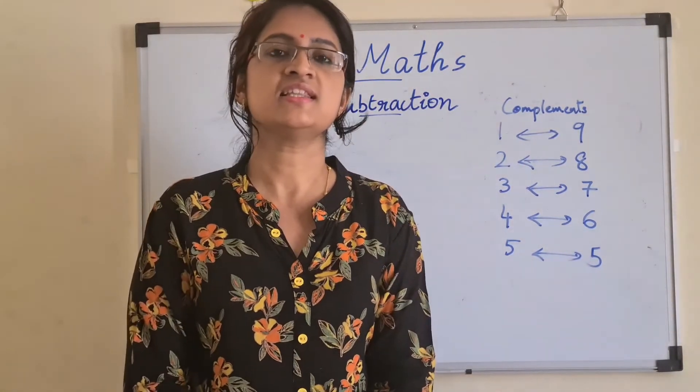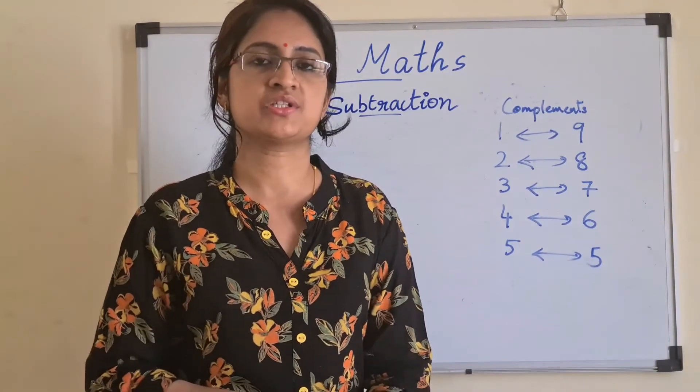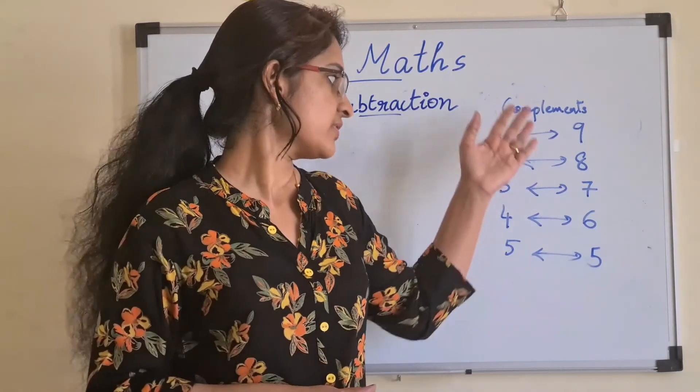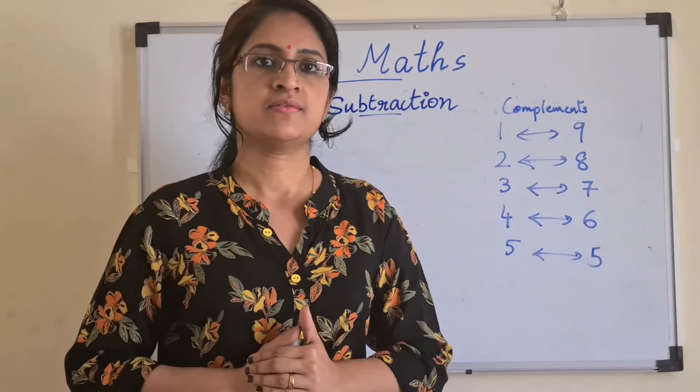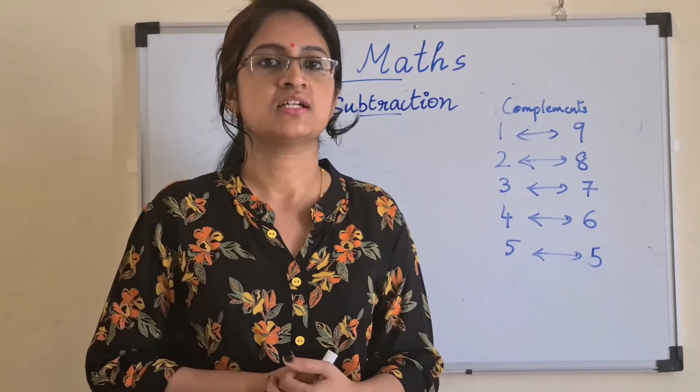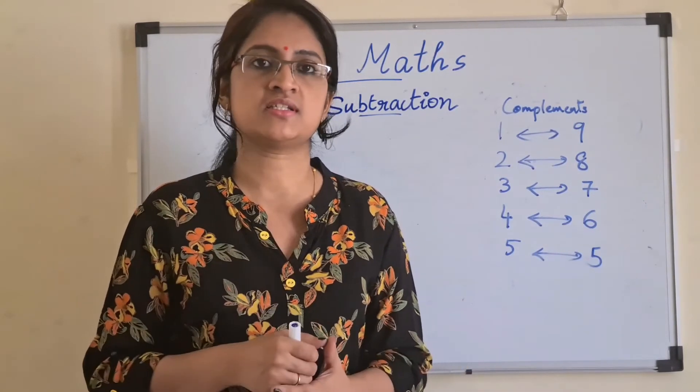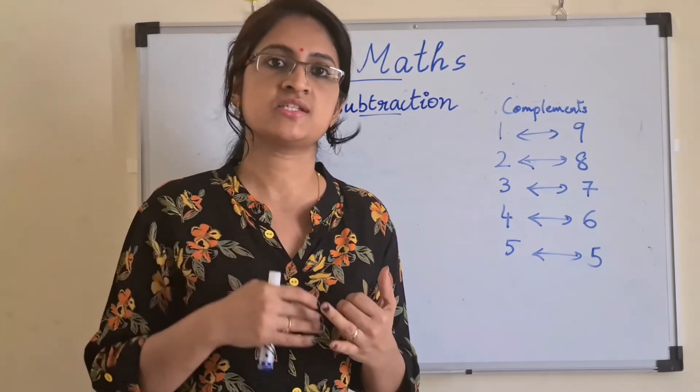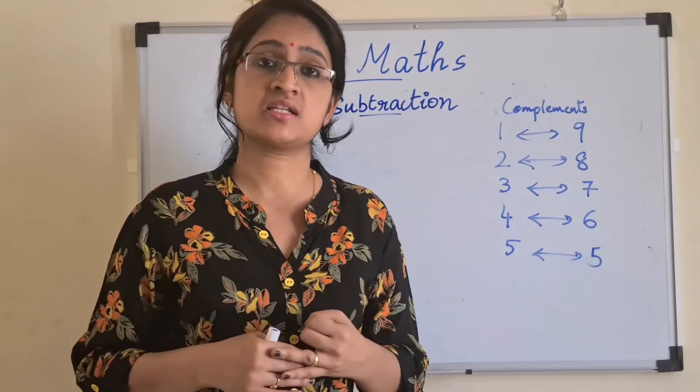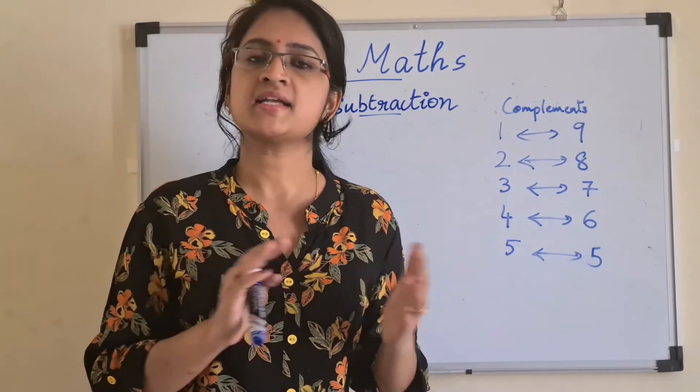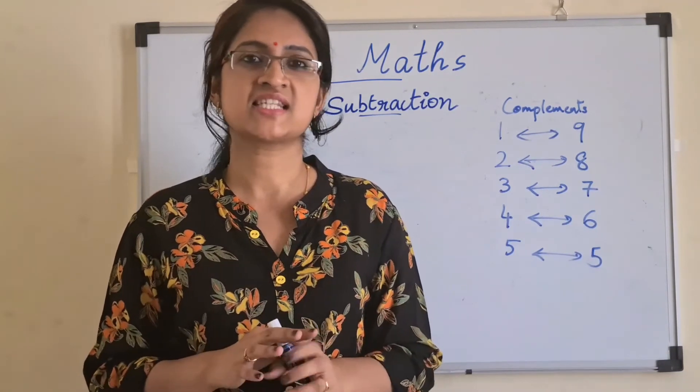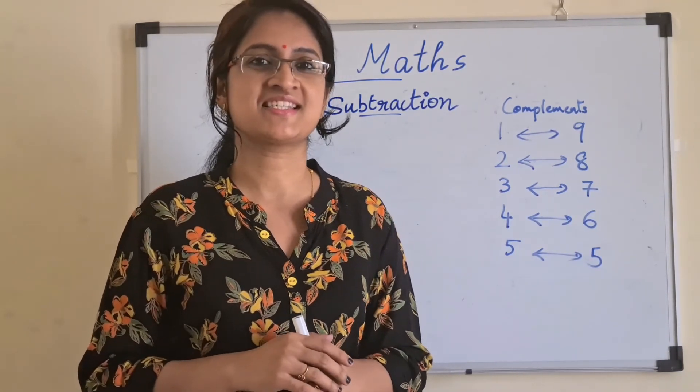Using the match and mismatch combination and the concept of complements, we will go forward with subtractions of more digits. 2 digit minus 2 digit, 3 digit minus 3 digits, or any unmatched number of digits. We will see that in the coming tutorials. Bye for now.